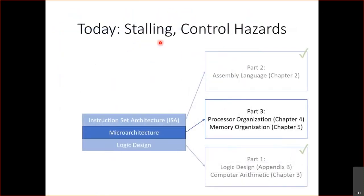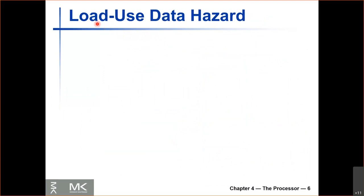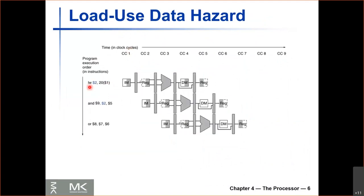Moving on to today's topic: stalling and control hazards. One of the places where we had to stall in the pipeline is whenever we have a load-use data hazard. A load-use data hazard occurs when you have a load instruction that writes to some register — for example register 2 — and then it's followed by an AND instruction or any other instruction that reads from register 2. This is different from a regular data hazard because when we have a load instruction, the value that we load is not available until after the data memory stage.